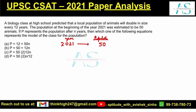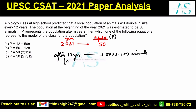So after 12 years, this population will double. If the population doubles, it would be 50 times 2, which is 100 animals. Here, P denotes the population and n denotes the number of years, which is 12.